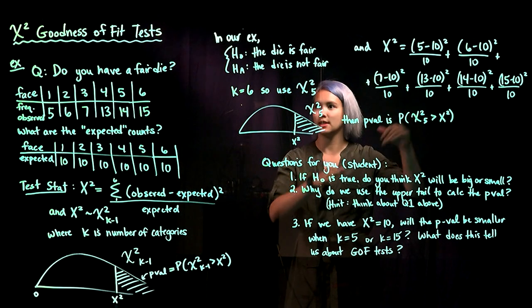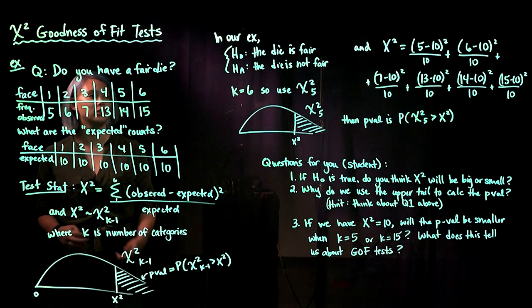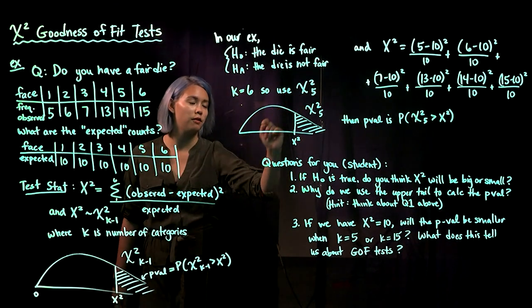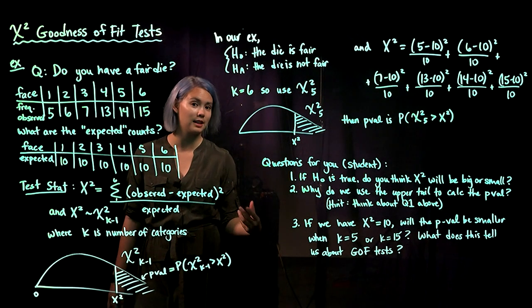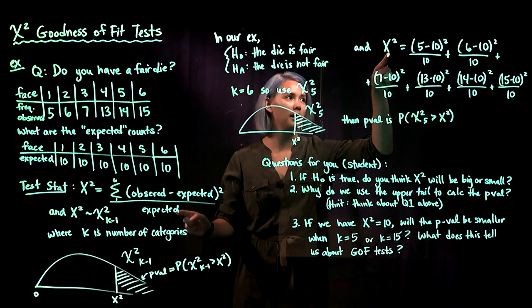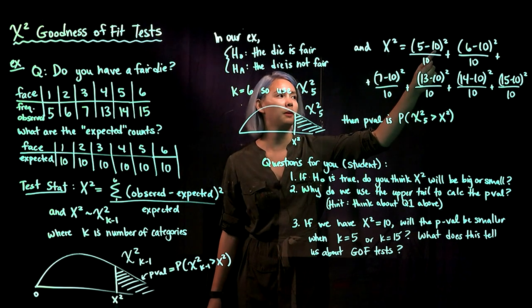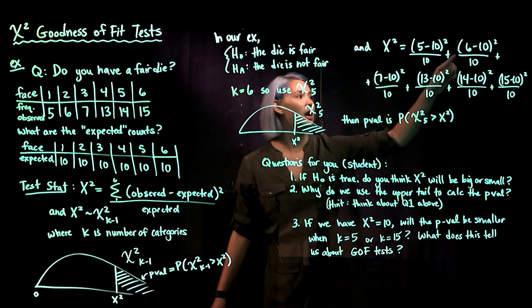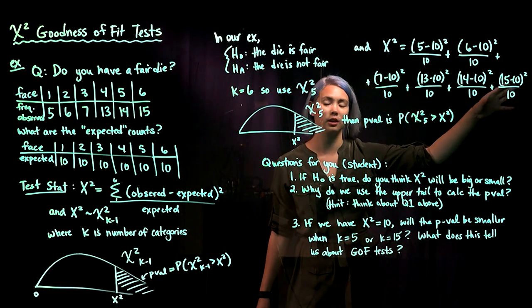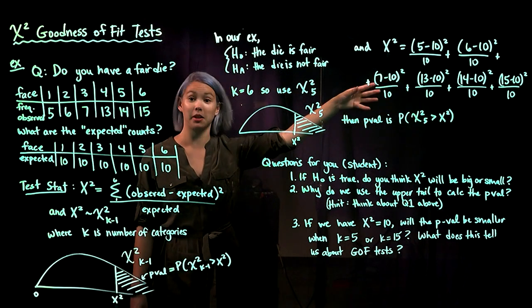Let's work through the die example. The null hypothesis is that the die is fair; the alternative is that it's not. We have six categories, so we use a chi-squared distribution with five degrees of freedom. The test statistic is observed minus expected squared divided by expected. We fill in the table for each face: face one has observed 5 and expected 10; face two has observed 6 and expected 10, and so on for all six faces.